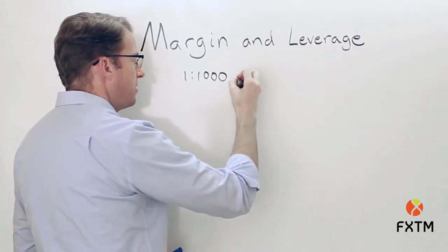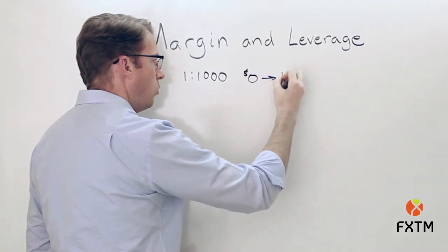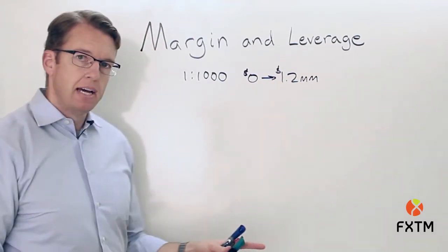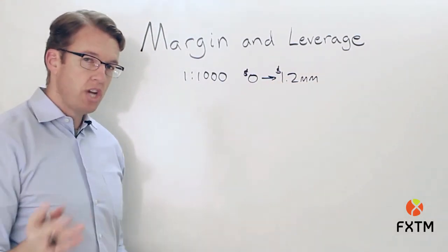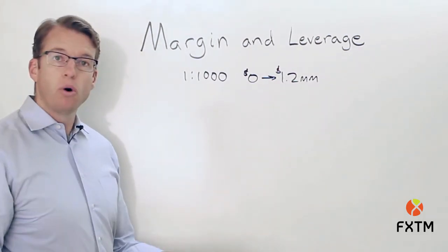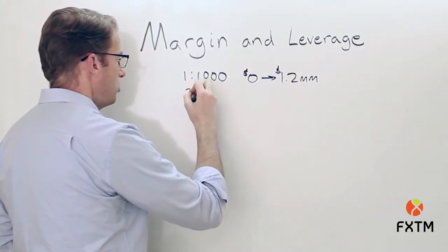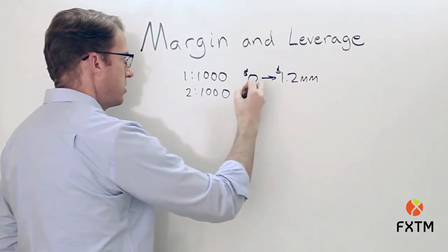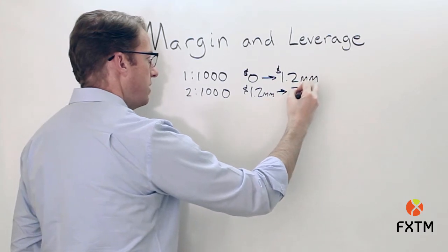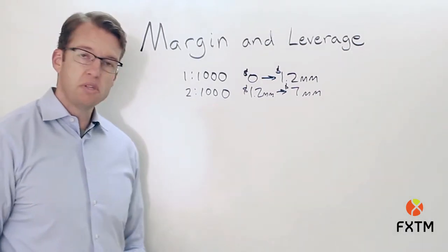Let's assume that the 1 to 1,000 leverage ratio applies for anything from zero dollars up to 1.2 million dollars in notional value. The leverage ratio then changes to 2 to 1,000 for anything from 1.2 million dollars up to 7 million dollars in notional value. That's going to change our calculation if a trader is holding open a larger position.